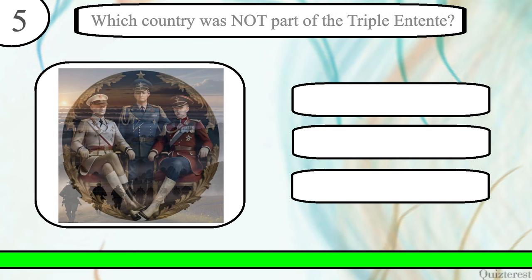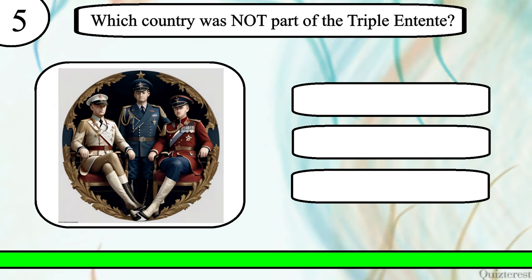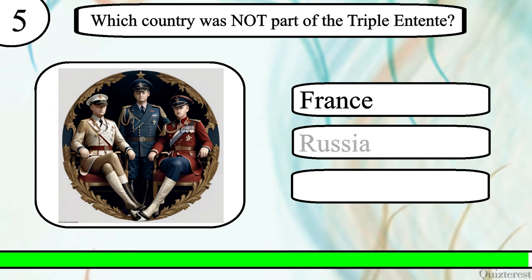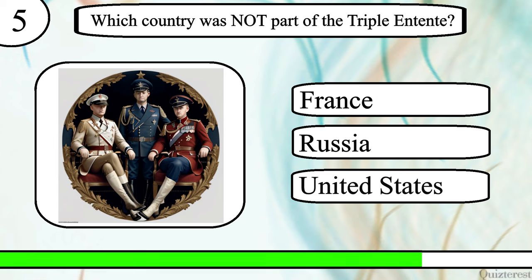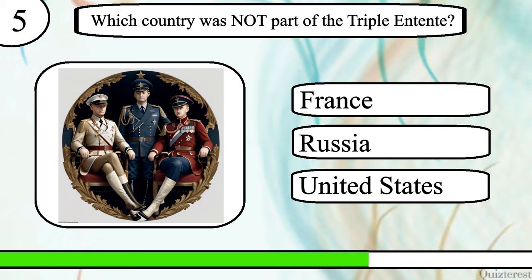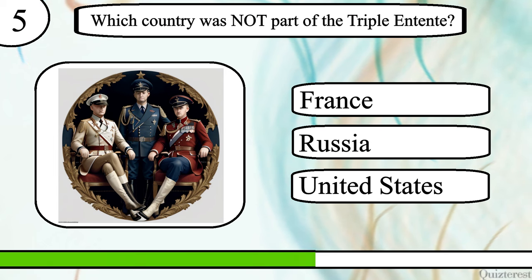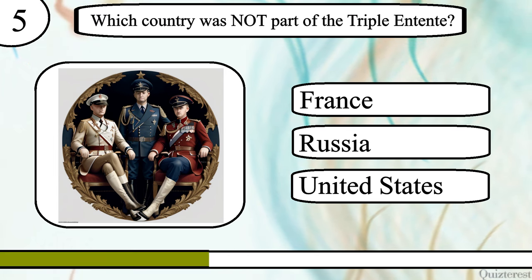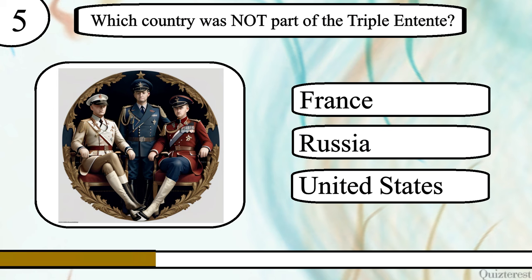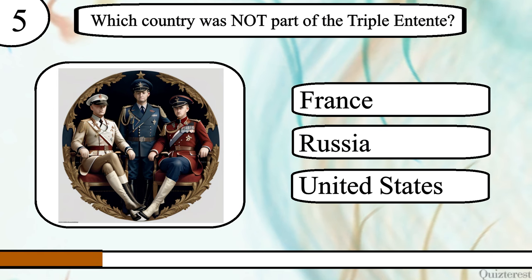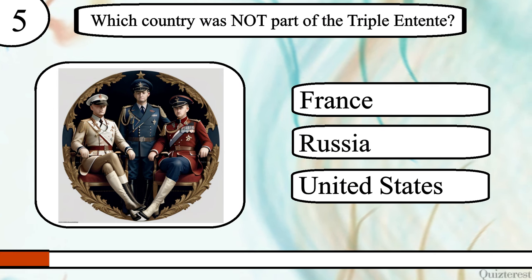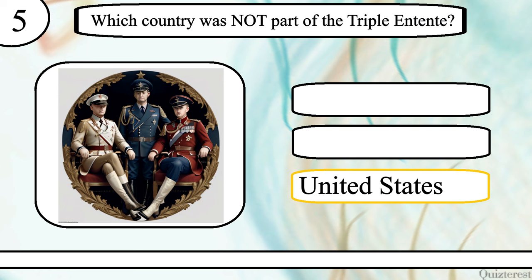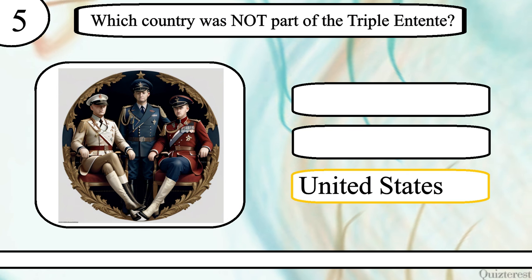Question 5. Which country was not part of the Triple Entente? France, Russia or United States? The correct answer is United States.